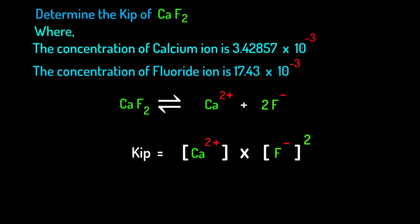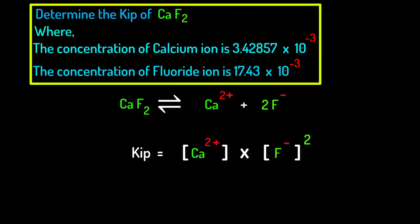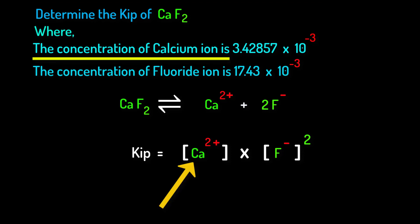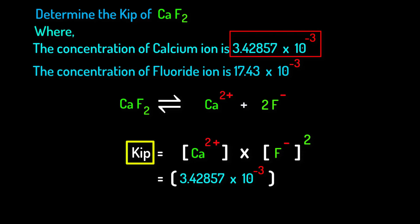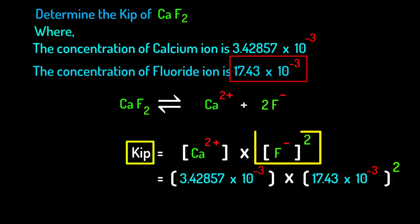Now I want you to focus on the data given in this question. The value of the concentration of calcium ion is 3.42857 times 10 inverse 3 and the concentration of fluoride ion is 17.43 times 10 inverse 3. So we can write Kip is equal to 3.42857 times 10 inverse 3 instead of this calcium ion times 17.43 times 10 inverse 3 whole squared instead of this fluoride ion.